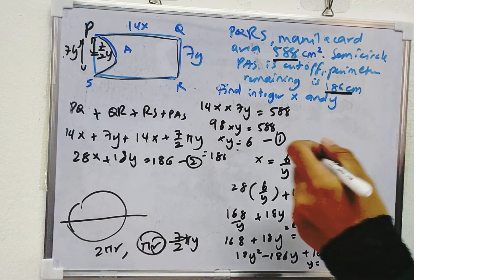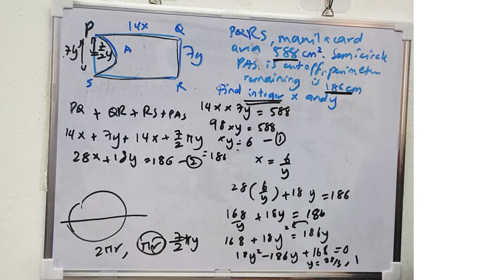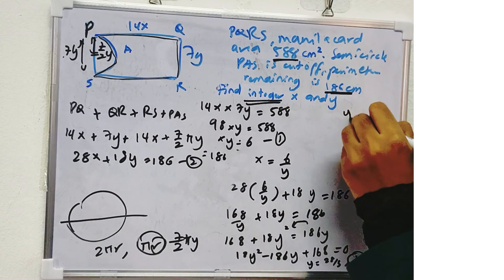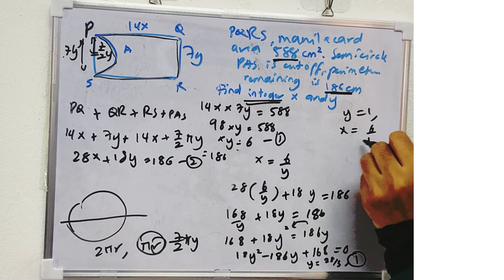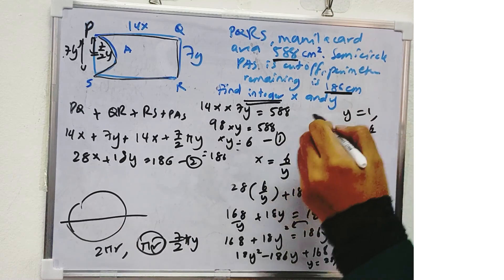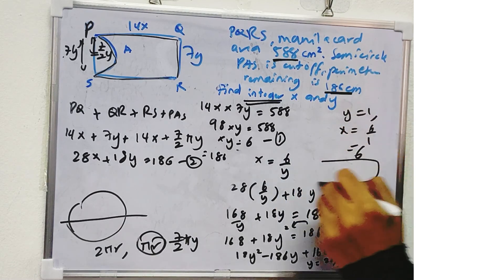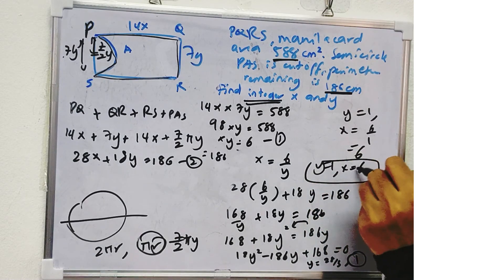So as you can see here, it said integer X and Y. So obviously 28 over 3 is not integer. So we will only take Y equal to 1. So when Y is equal to 1, X is equal to 6 over 1 which is 6. So this is the answer where Y is equal to 1 and X is equal to 6.